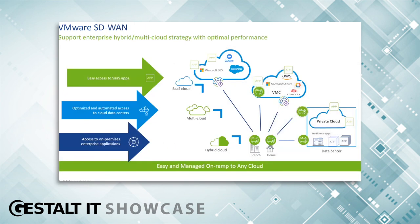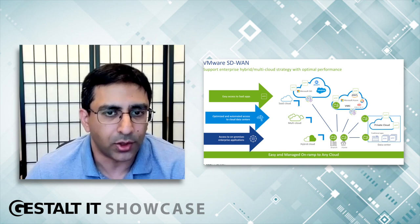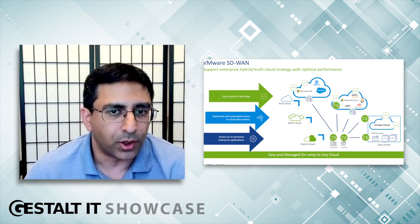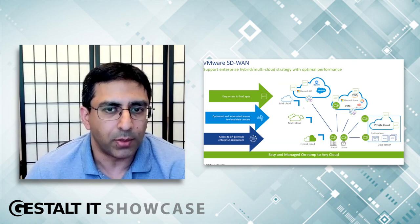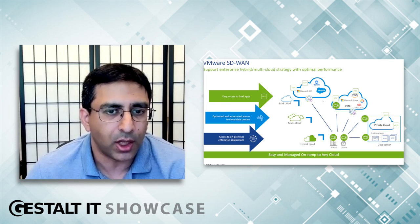Looking at the larger SD-WAN system, this is all about connectivity and making connectivity super easy. Whether you're going over to a SaaS cloud like Office 365 or Zoom, we're able to improve experiences by way of a technology called DMPO — Dynamic Multipath Optimization. We're able to do things like single packet loss recovery and switch over to alternate links within sub-seconds. These things allow us to improve both the performance and the resilience of applications and keep people productive.